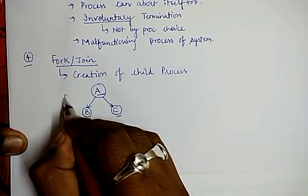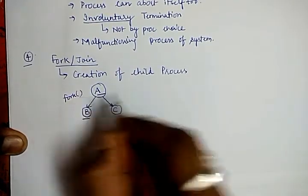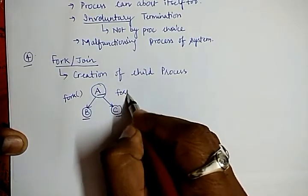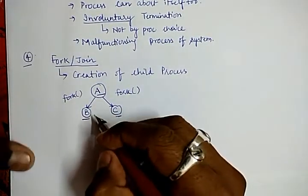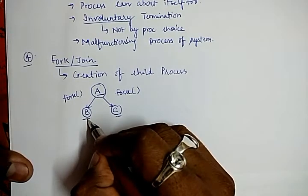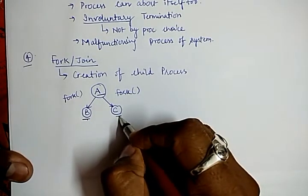For this it calls a system call named as fork. But when B completes its work or C completes its work, what will be done?